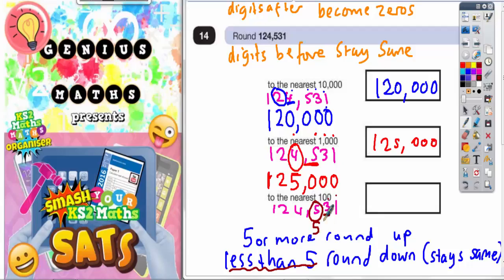And again, once we've decided what's happening to the circle digit, we just need to apply these two rules up here. The digits after the 5 become zeros. So we've got a 0 there and a 0 there to replace the 3 and the 1.